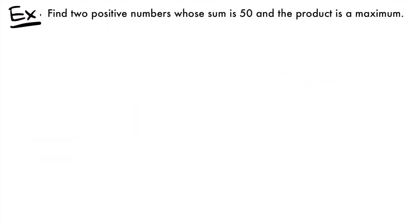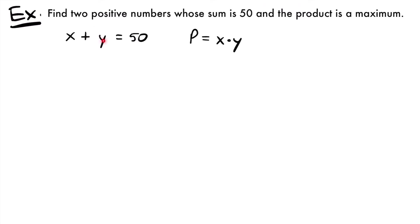Here's our first example: we want to find two positive numbers whose sum is 50 and whose product is a maximum. We'll represent the two numbers as x and y, so x plus y equals 50. We want to maximize the product P equals x times y. So we have two equations from our problem.